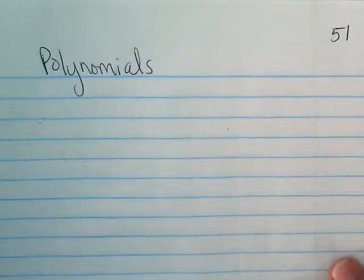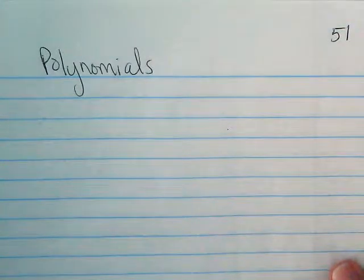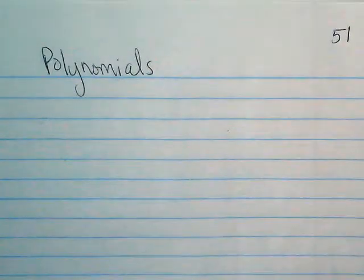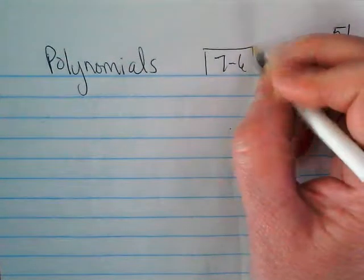So when I was out sick the other day, I had you guys watch the videos on polynomials in the textbook and I asked you to take some notes. I don't know if you took them in your spiral or somewhere else, but these are the notes that I expect to see in your spiral notebook. Go ahead and label this polynomials. This goes with 7-6 in the book.